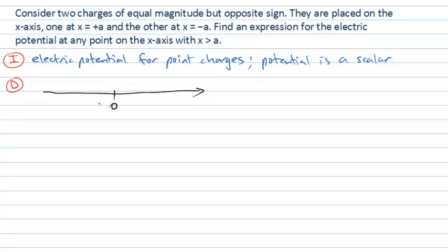We have these two charges, one placed at x equals plus a and one placed at x equals minus a. These have the same magnitude but opposite sign, so let's make this one here minus q and this one here plus q.